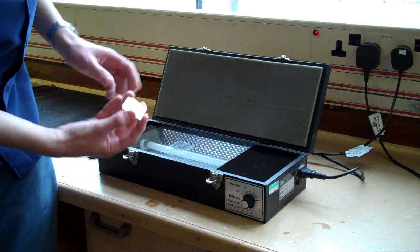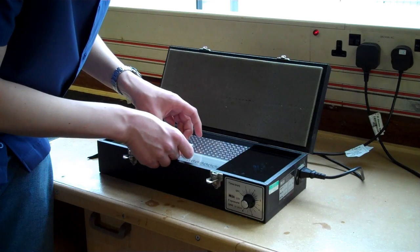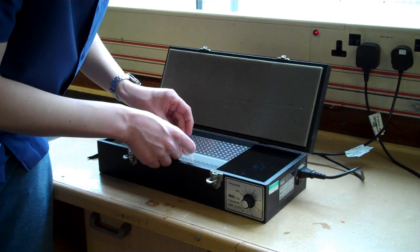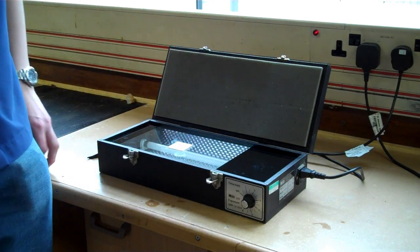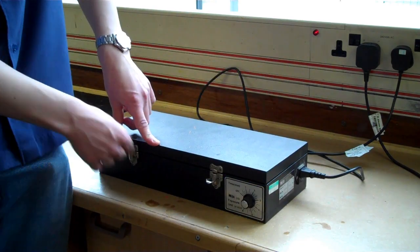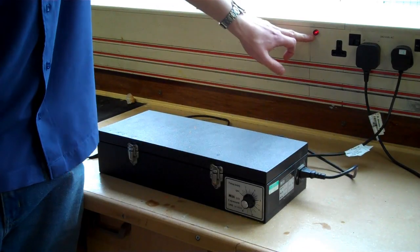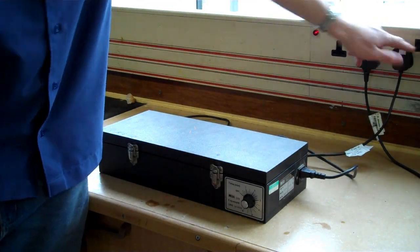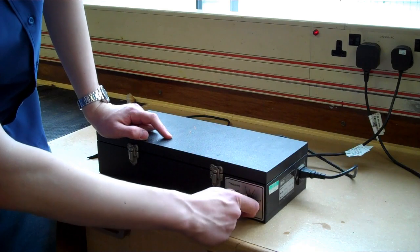And then we place the board onto the acetate ensuring that we can't see any of the black artwork. Close the lid, check that it's plugged in and the power's on and it's also switched on, and we set it to 2 minutes.